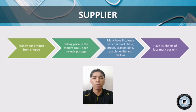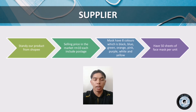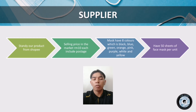Assalamualaikum warahmatullahi wabarakatuh. My name is Muhammad Amir Asa bin Muhammad Asrin, matrix number A21A3298. Our supplier is from Shopee and our product selling price in the market includes postage. Our product, FASMAS, comes in 8 colors: black, blue, green, orange, pink, purple, white, and yellow. FASMAS has 50 sheets per unit.